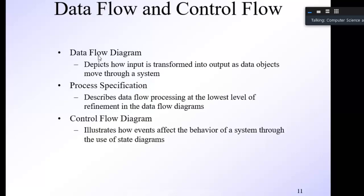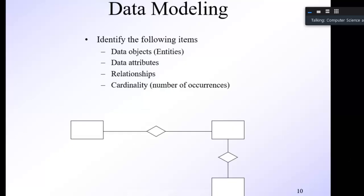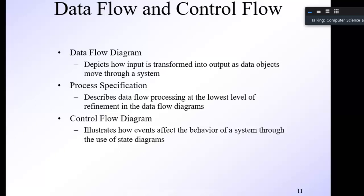The data flow diagram depicts how input is transformed into output as data objects move through a system. Process specification describes data flow processing at the lowest level of the control flow diagram. The control flow diagram illustrates how events affect the behavior of a system through the use of state diagrams.